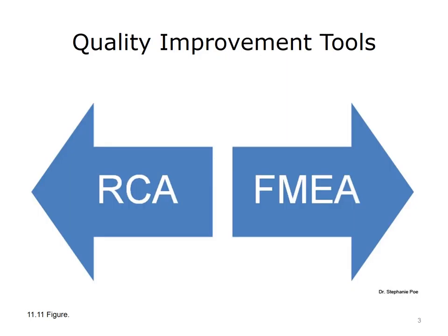There are two quality improvement tools used in all organizations accredited by the Joint Commission. They are known as mantras of modern risk management because they have the power to transform patient safety through learning. Both are systematic and team-based. One is called RCA, or Root Cause Analysis, and it looks to the past to learn from mistakes. The second, Failure Modes and Effects Analysis, or FMEA, takes the opposite approach and looks to the future by anticipating errors and putting processes in place to either prevent or mitigate potential harm.